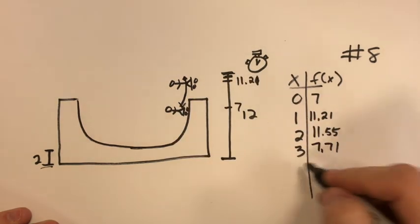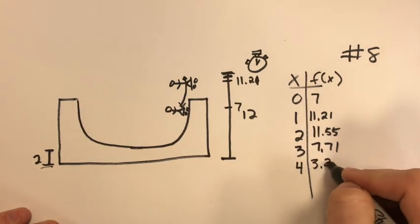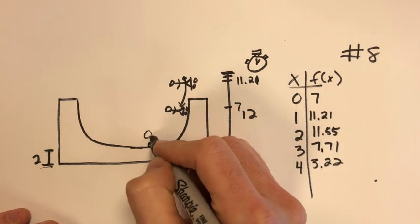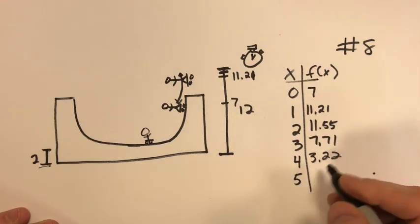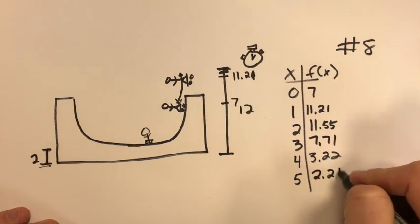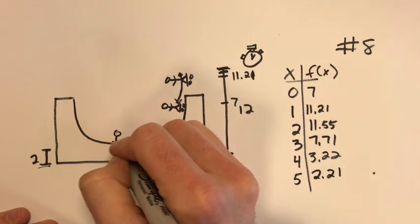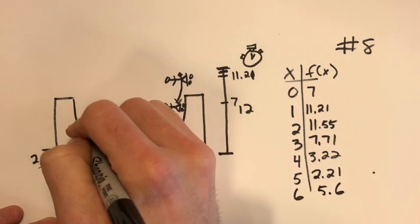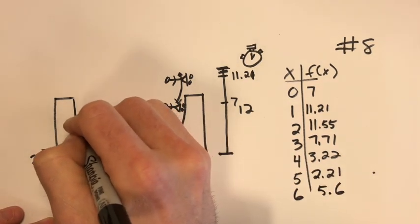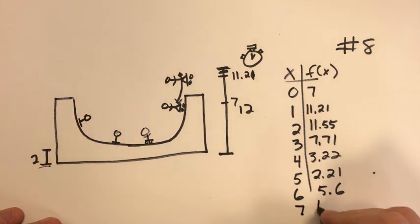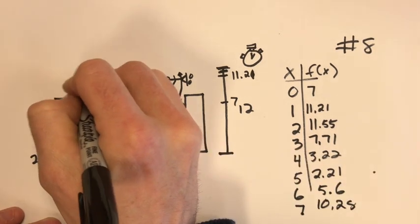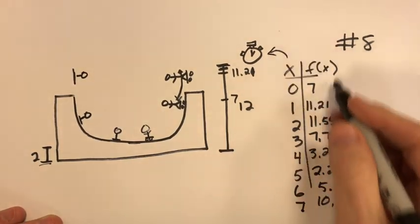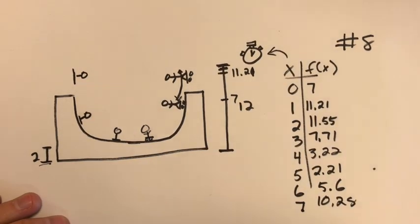At five seconds he is at 2.21, so maybe he's coming up the other side now. Six seconds he's at 5.6, so he's coming up here. And at seven seconds he's at 10.28, shooting up the other side, getting air on the other side. So x is the time in seconds and f(x) is the skateboarder's height off the ground, and here's the data.